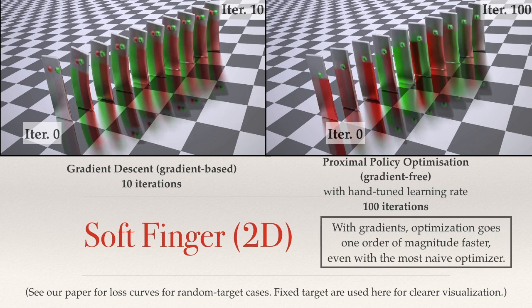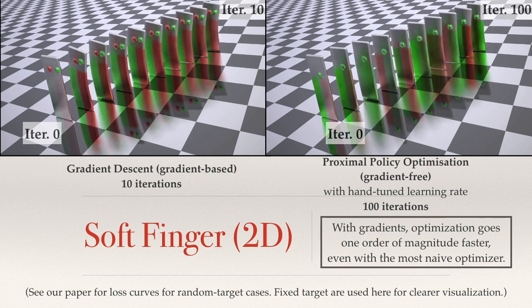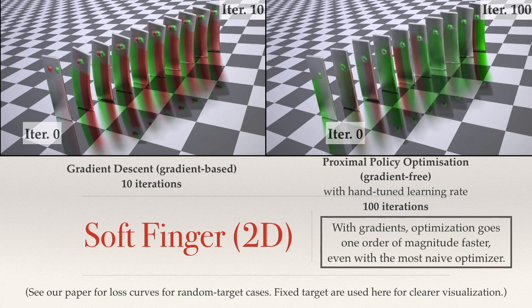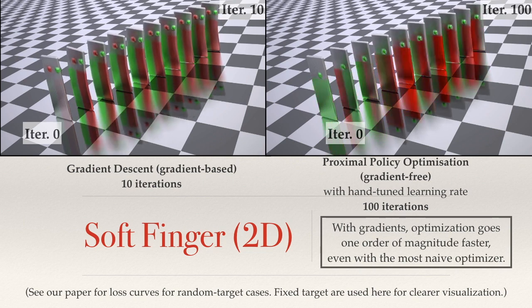In contrast, the state-of-the-art reinforcement learning algorithms, without using gradients, converge one order of magnitude slower than our vanilla gradient descent.